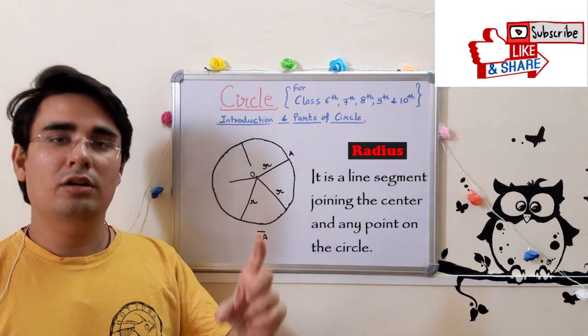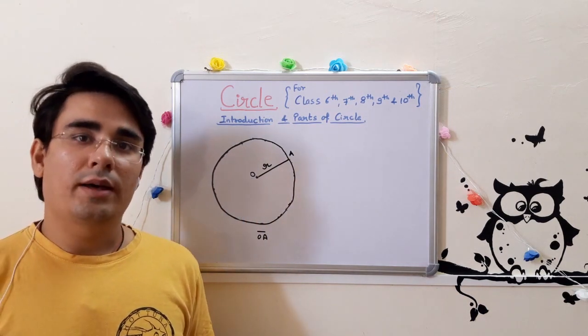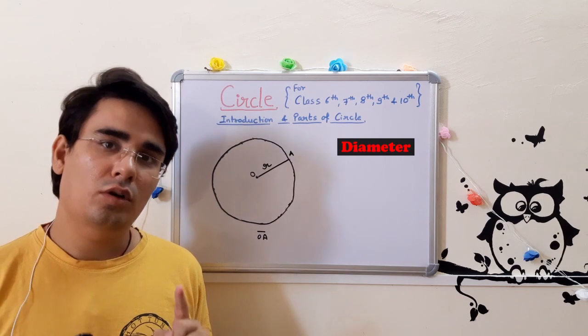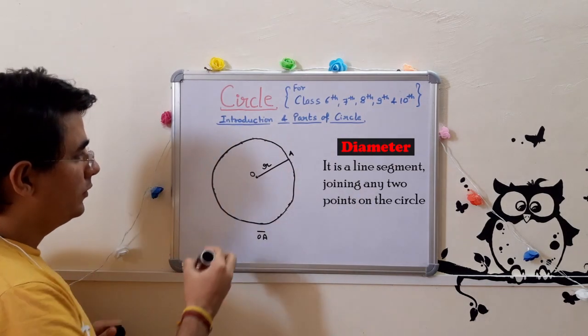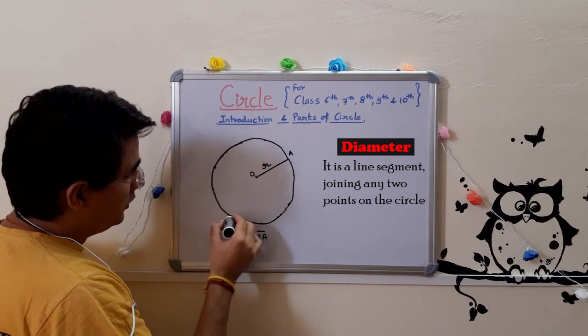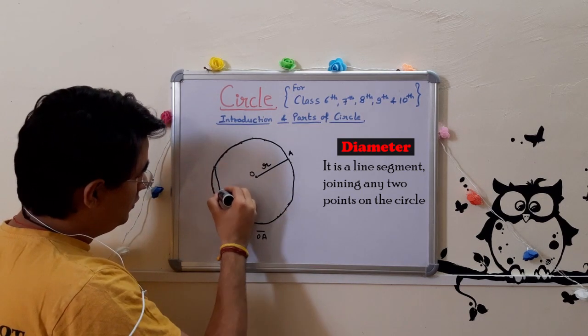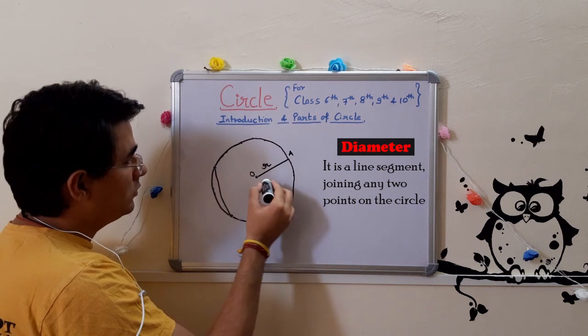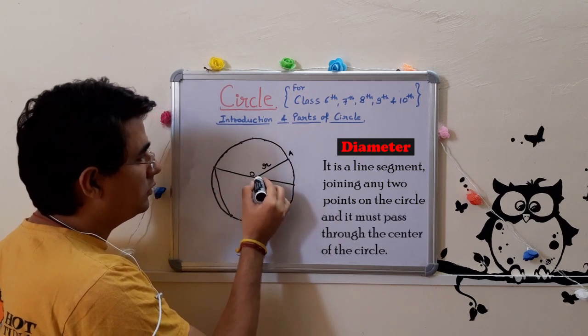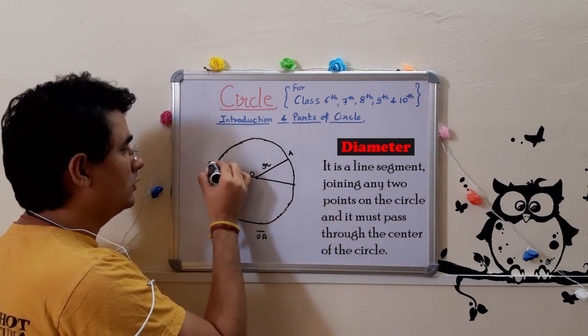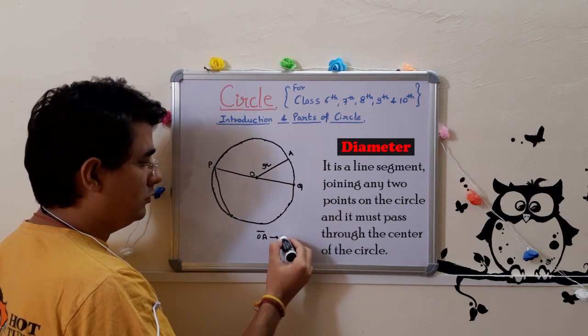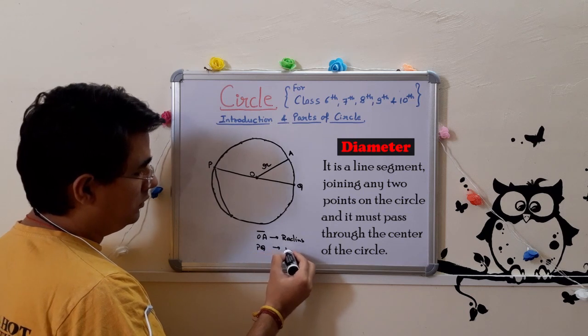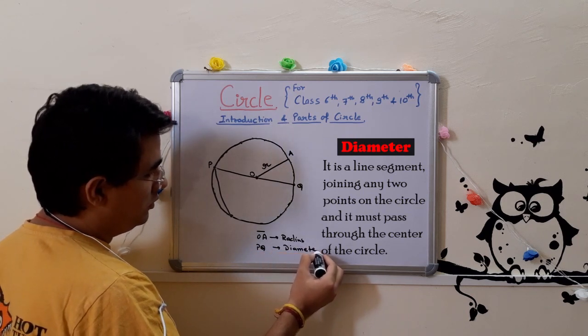Next comes the diameter. Diameter is also a line segment joining any two points on the circumference. But what will it be, any two points? This is not a diameter. There is one more condition to a diameter. That it must pass through the center of the circle. So PQ is a diameter.